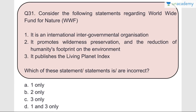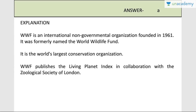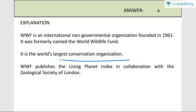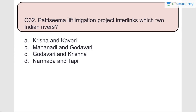Question number thirty-one: Consider the following statements regarding the World Wildlife Fund for Nature. Statement one - it is an international intergovernmental organization - wrong. Statement two - it promotes wilderness preservation and the reduction of humanity's footprint on the environment - correct. Statement three - it publishes the Living Planet Index - correct. Answer is A, one only, because the question asks which is incorrect - WWF is an international non-governmental organization founded in 1961, formerly known as World Wildlife Fund. It is the world's largest conservation organization. WWF publishes the Living Planet Index in collaboration with the Zoological Society of London.